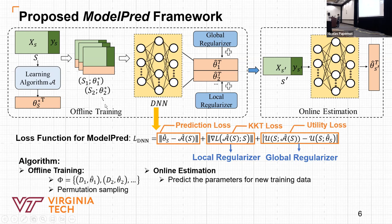Overall, this framework proceeds in two phases. In the first offline training, we collect a set of training samples by permutation sampling. And then the trained DNN Â can be used for efficient model parameter prediction, given a new training subset through just an evaluation of Â.